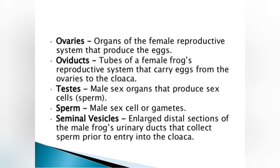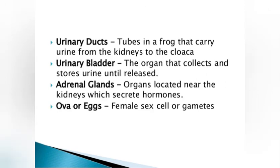The reproductive parts include ovaries, oviducts, testis, sperm, and seminal vesicles. Ovaries are the female reproductive organs that produce eggs. Oviducts carry eggs from the ovary to the cloaca. The testis is the male sex organ that produces sperm. Urinary ducts carry urine from the kidneys to the cloaca. The urinary bladder collects and stores urine until released. Adrenal glands, located near the kidneys, create hormones. Ova or eggs are the female sex cells or gametes.